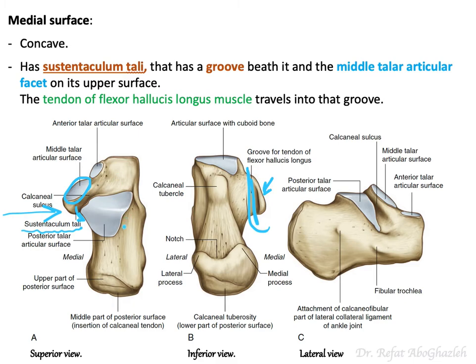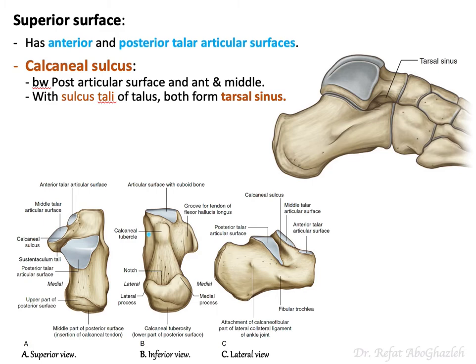Looking at the superior surface of the calcaneus: because the talus sits above the calcaneus, there are three articular surfaces for the talus — anterior, middle, and posterior. The middle one is located on the sustentaculum tali on the medial side, but overall you have anterior, middle, and posterior talar articular surfaces.